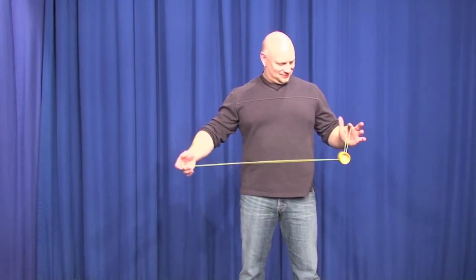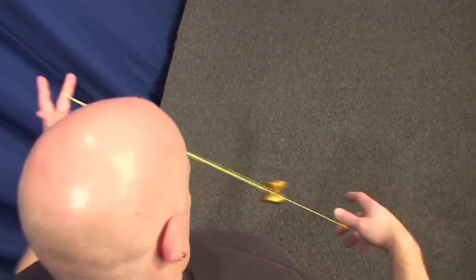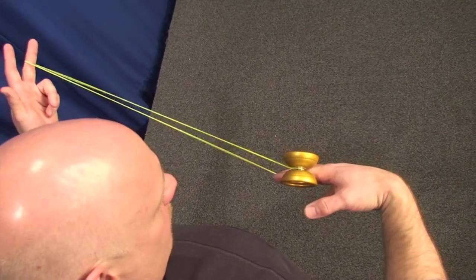Start out by throwing a really hard sleeper and go into a trapeze. Now swing the yoyo around as if you were going to do a his brother mount, but instead land the yoyo on the index finger of your throw hand.